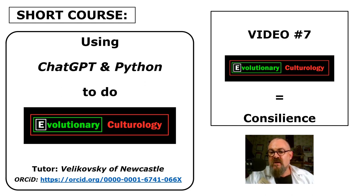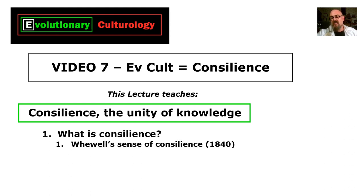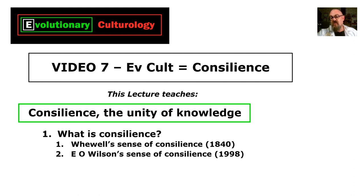Welcome to Video 7 in this course: How Evolutionary Culturology Achieves Consilience, the Unity of Knowledge. This lecture teaches consilience, the unity of knowledge. Firstly we'll ask what is consilience, and we'll look at Whewell's sense of consilience from 1840, then E.O. Wilson's sense from 1998, and show how Ev Cult achieves both of them.